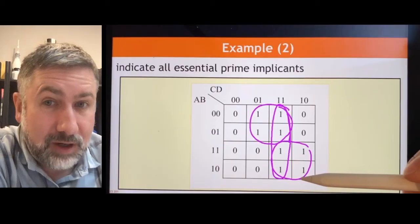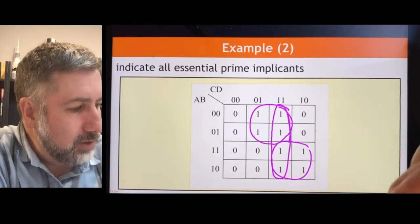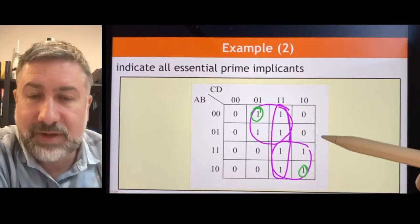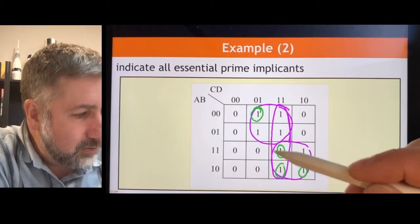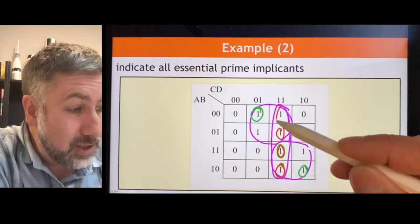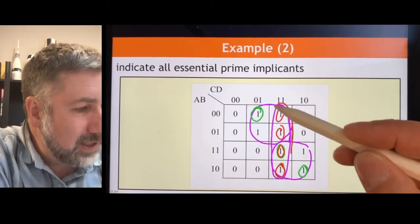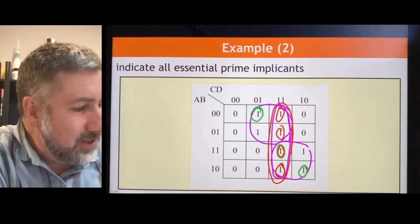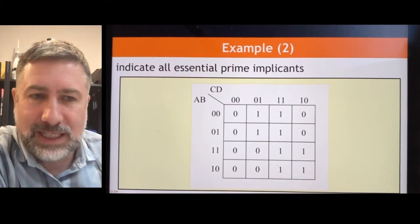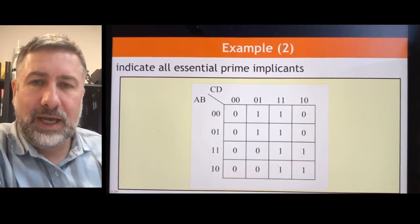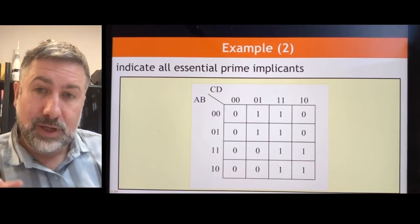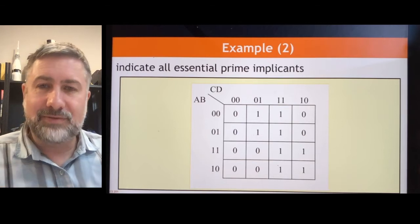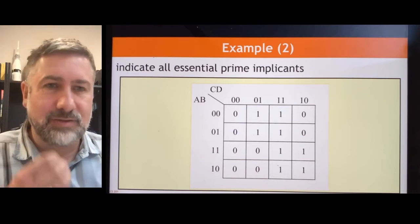But only two of them are essential. Here is a term that is not covered by any other four-term group. Here is another term that is not covered by any other four-term group. But all of these terms are covered by some other four-term group, so this rectangular term is not needed — it's prime but it's not essential. The groups have to be a power of two, they have to be rectangular, they have to be as big as they can be, and they have to contain at least one 'one' that isn't covered any other way.